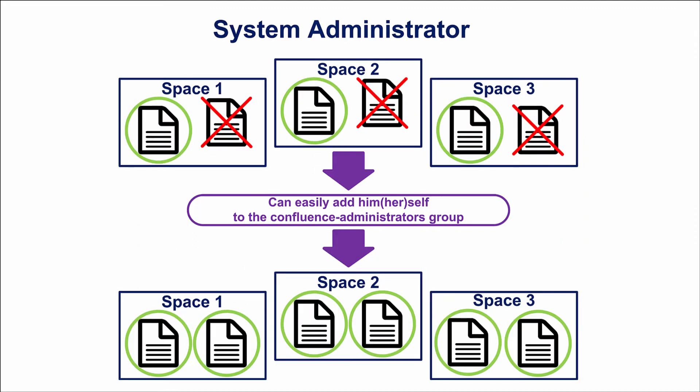System Administrator permissions define who can control system-wide administrative settings. Users with System Administrator status usually belong to the Confluence Administrators group by default. But if not, they can easily add themselves to this group and see all the content.